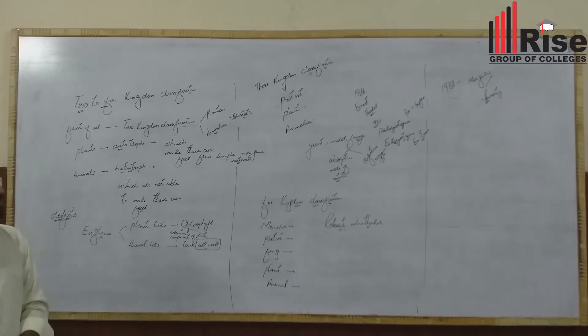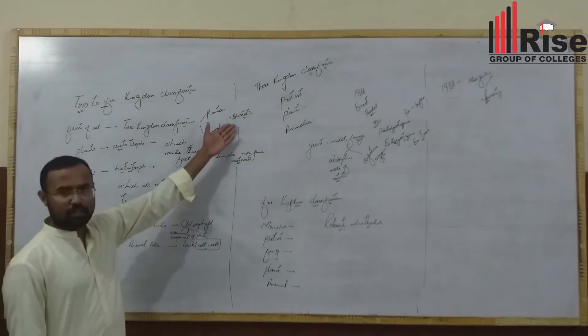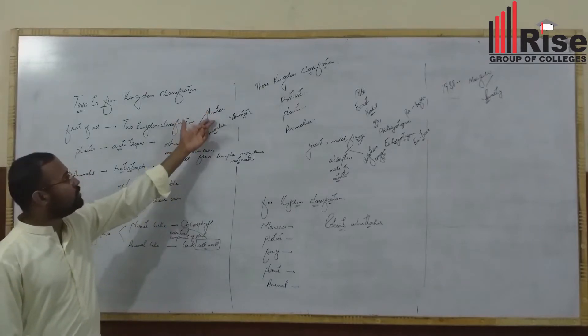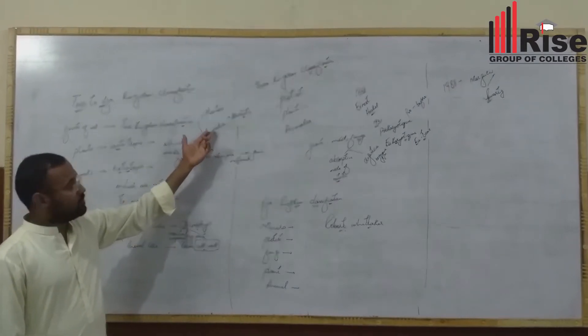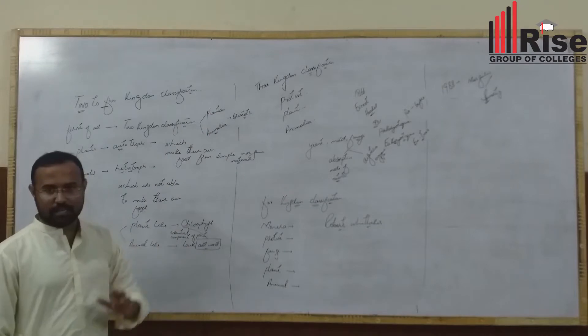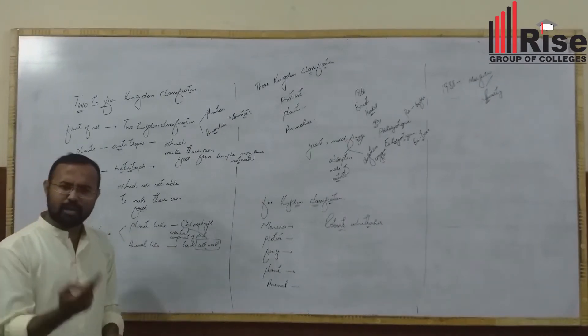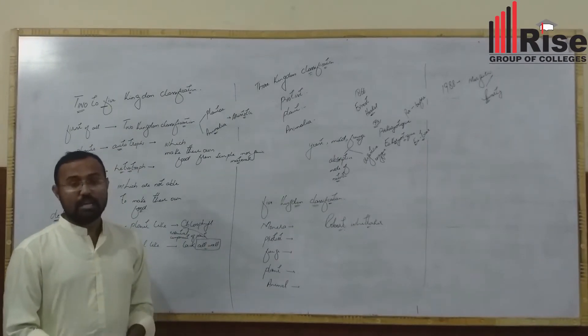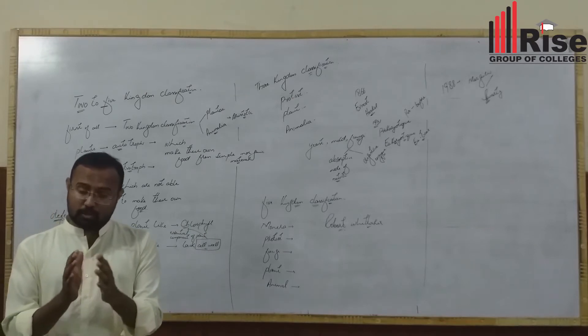Two kingdom classification was proposed by Aristotle. It classified living organisms into two groups: first one, plants, second one, animals. This classification has two bases.